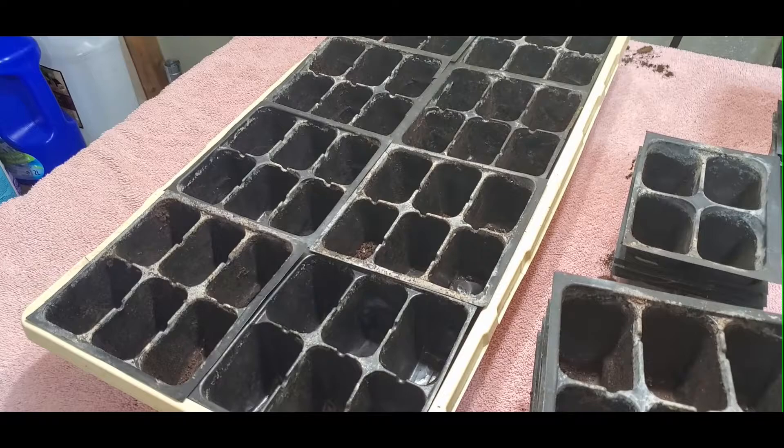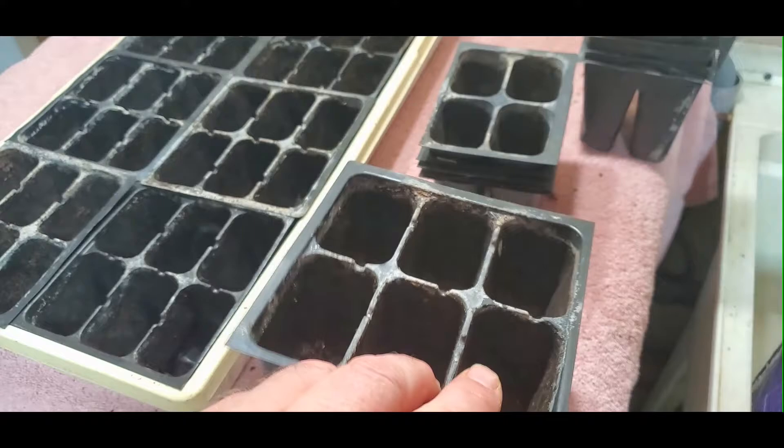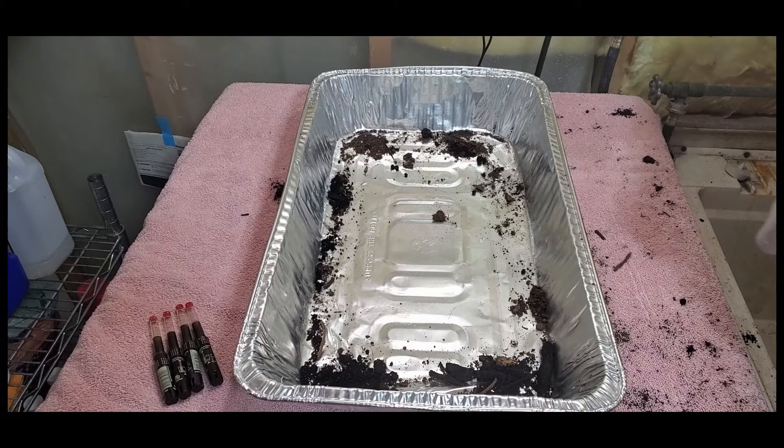You just want to fill all your trays up and you're lightly packing down the soil. You want them all to be the same amount of soil in each cell. These are the old style six-pack.